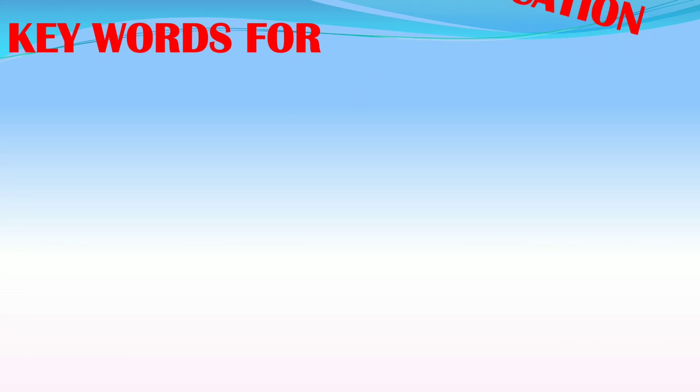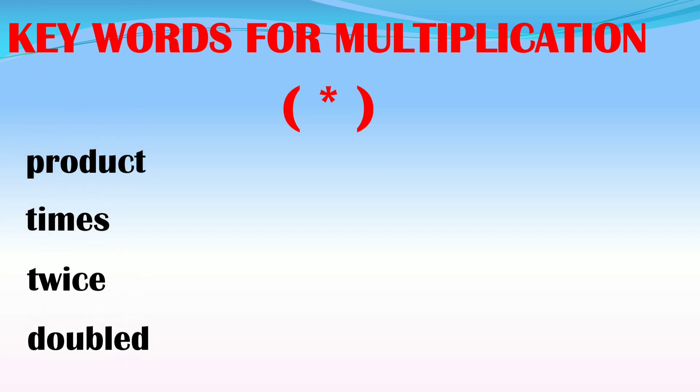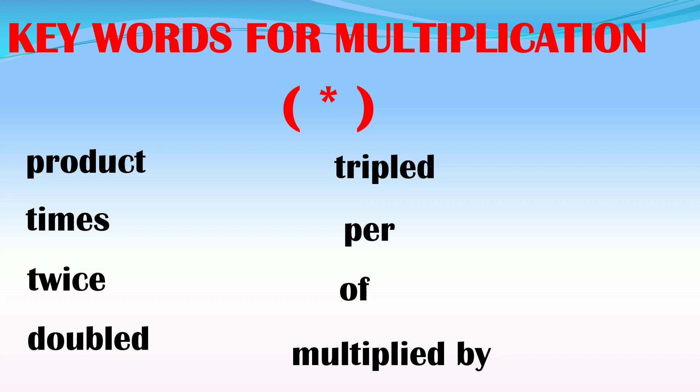Keywords for multiplication. This will be the symbol for multiplication. We will not use the x because it indicates a variable, so we use the asterisk or open and close parentheses. The keywords are: product, times, twice, doubled, tripled, per, of, multiplied by.